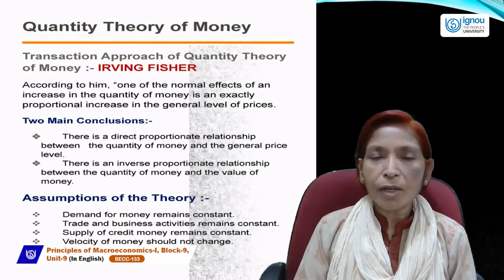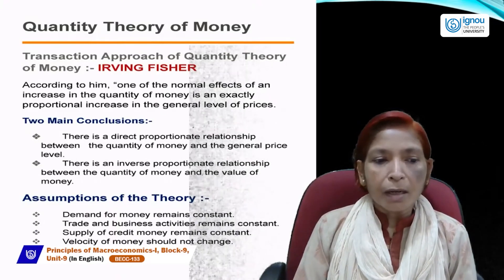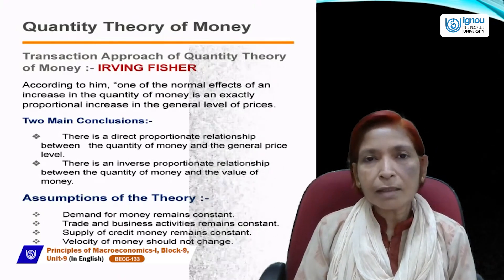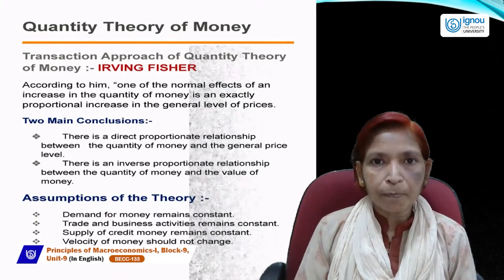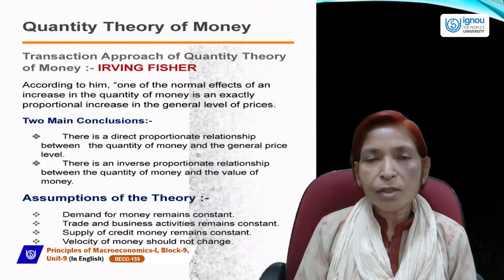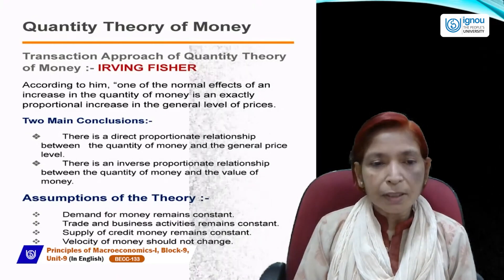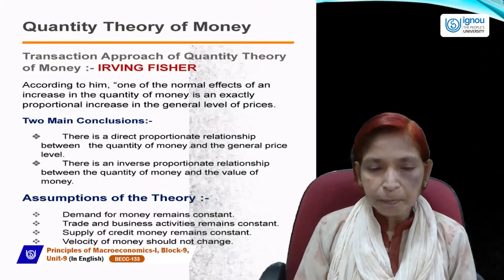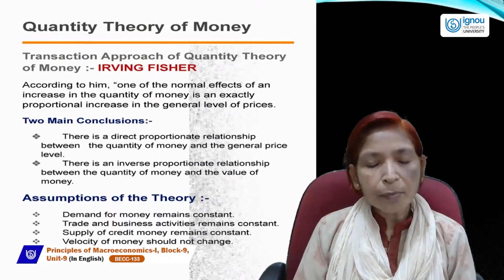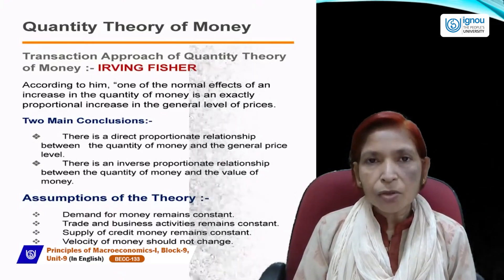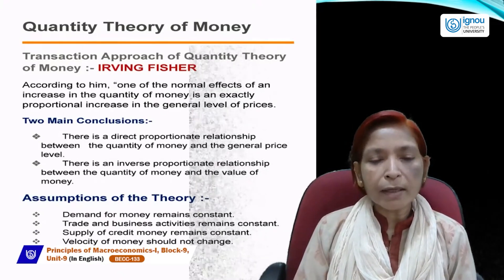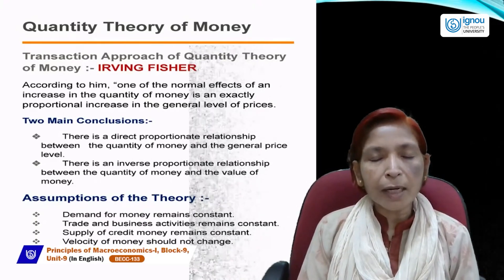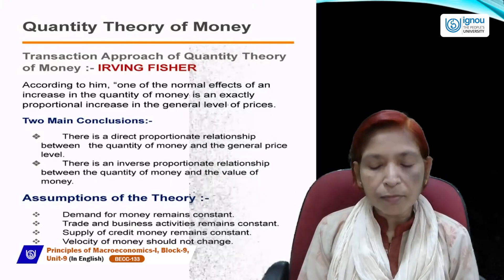There is an inverse relationship between quantity of money and value of money. Value of money tells us the purchasing power — how many units we can purchase with existing money. If price rises, purchasing power falls. If price falls, purchasing power rises. So there is an inverse relationship between money supply, price level, and value of money.